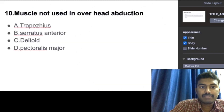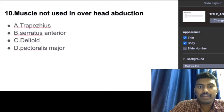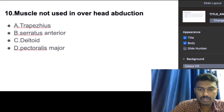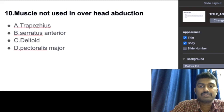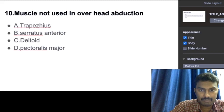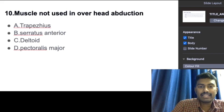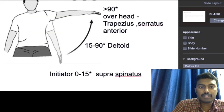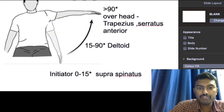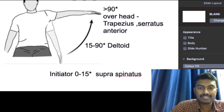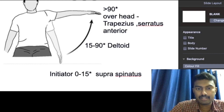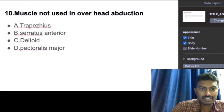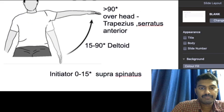The last question asks which muscle is not used in overhead abduction. For the initial 15 degrees, supraspinatus is used; from 15 to 90 degrees, deltoid is used; and for overhead abduction, trapezius and serratus anterior are used. Pectoralis major is the option to be ruled out for overhead abduction.